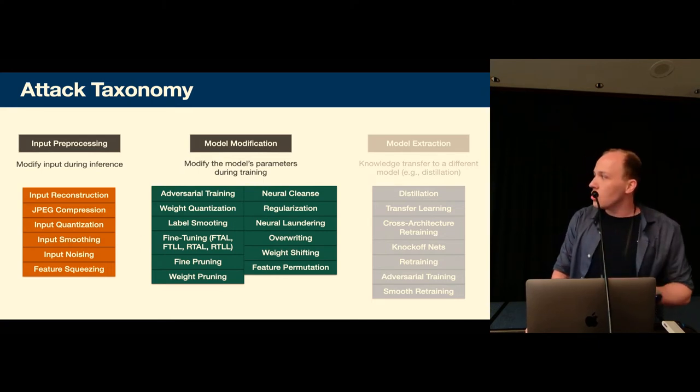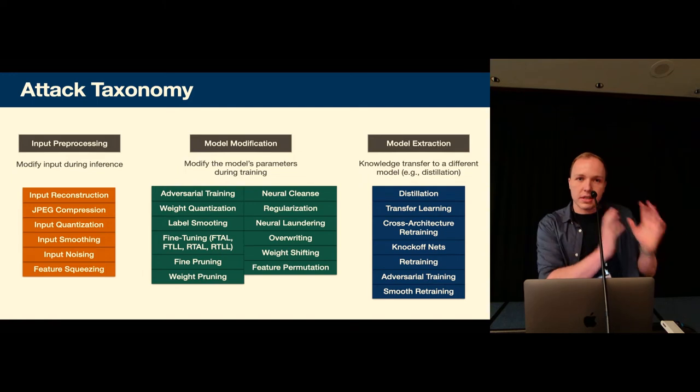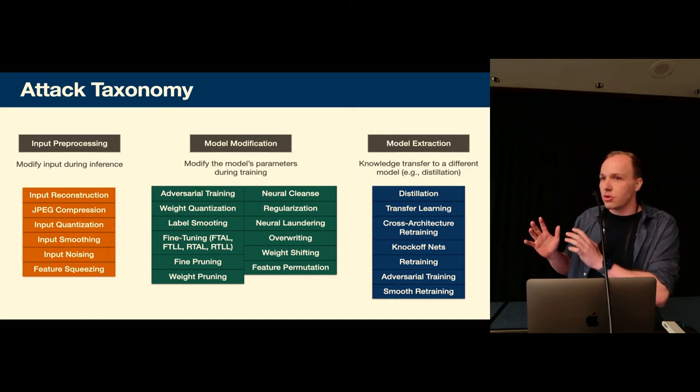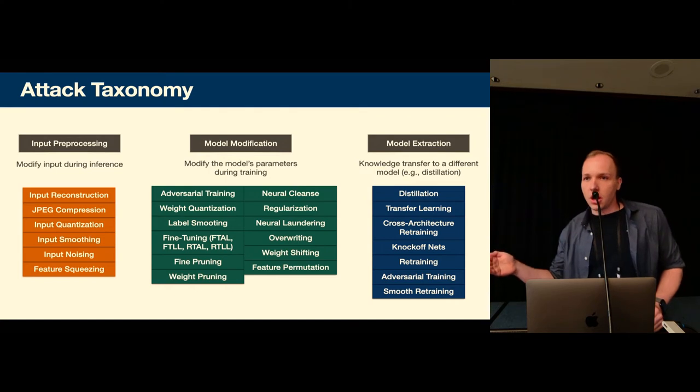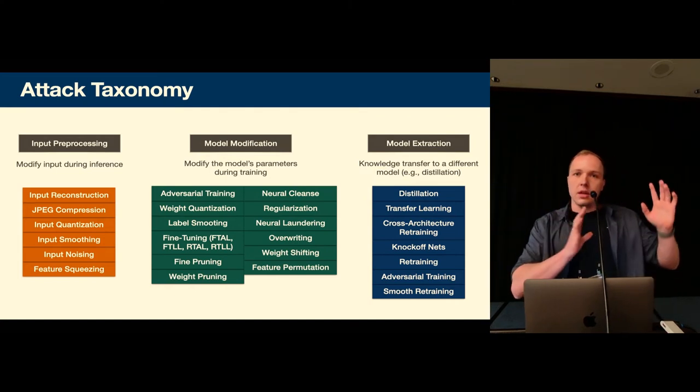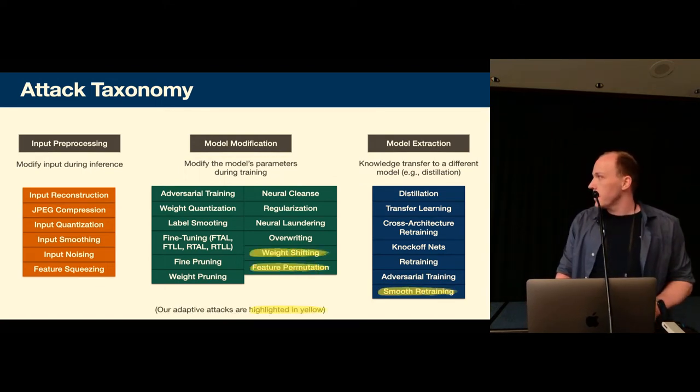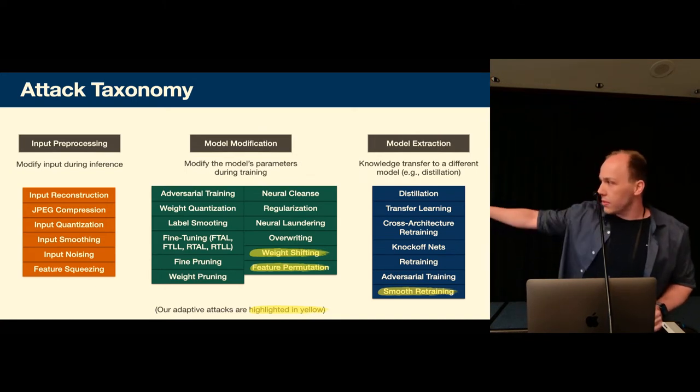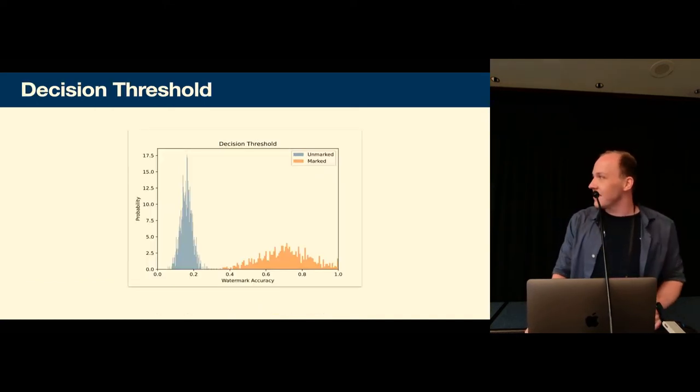Then we have model modification attacks which some of the well-known ones might be neural cleanse for those working with backdoors or neural laundering which is specifically tailored against watermarks. And finally we have model extraction attacks where the attacker takes the model, downloads the stolen model and then uses a distillation, a knowledge distillation approach to train a different model. So model extraction attacks they can even change the model architecture and we still want to be able to tell that the information from our model was used in the stolen model. So in the paper we describe adaptive attacks and three of them are listed here and I will be showing the results in subsequent slides.